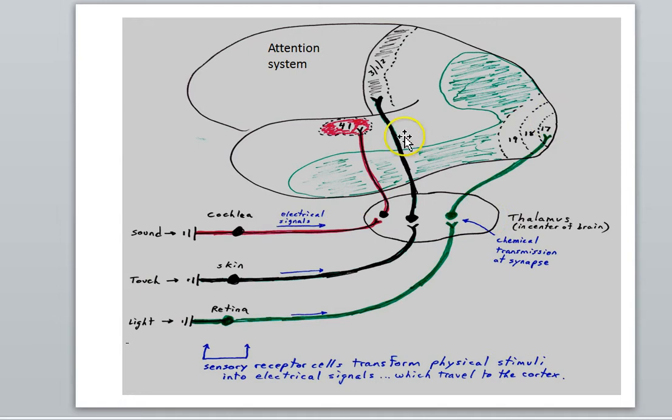Remember here was our thalamus, we pulled it outside, really it's deep in the brain, pulled it out here so we can see the synapses. And recall, just to recap, that what all these sensory organs are doing is transforming some physical stimulus into electrical signals, the language of the brain.